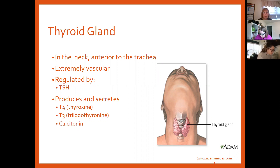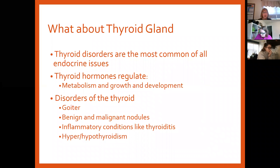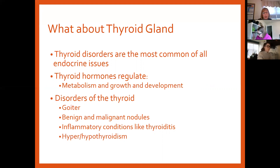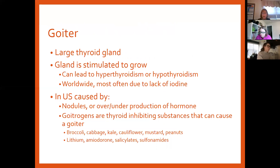The thyroid gland is the most common of all endocrine issues. We've talked about its role in growth, development, and metabolism — and there are many disorders. We'll talk about goiter, benign and malignant nodules, thyroiditis — when you have inflammation of anything it's an 'itis' — and we'll talk about hyper and hypothyroidism because those are the big issues. A goiter is from the Latin word for 'gutter' — you see that space in your neck; when you have a goiter it fills and closes it up. It's stimulated to grow.